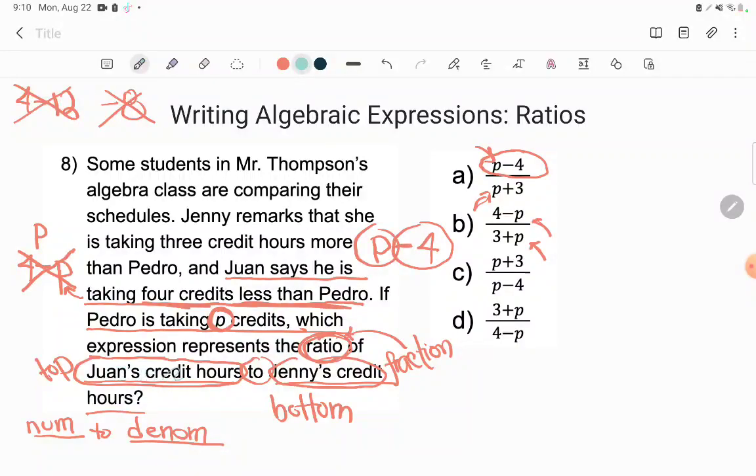And they asked me to do Juan's credit hours to Jenny's credit hours. Now let's go figure out what the problem says about Jenny's credit hours. So Jenny remarks that she is taking three credit hours more than Pedro. Three credit hours more than Pedro. So again, we don't know Pedro. We're calling Pedro P. But if Jenny's taking three more than that, then she's P and three more. And that absolutely makes sense. We can see there's Jenny doing three more than Pedro.